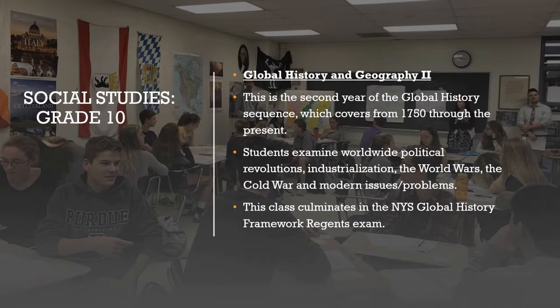For those who opt for the Global History and Geography I sequence, they can continue with Global History and Geography II, which covers 1750 all the way up to the present. Students will examine worldwide political revolutions, industrialization, and the various world wars. You will work on critical thinking and analytical skills, as well as writing skills through the New York Global History framework, and your skills will be assessed at the end of the year with the Regents exam in June.